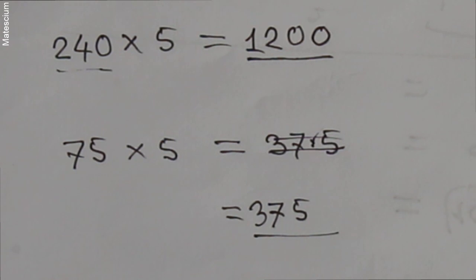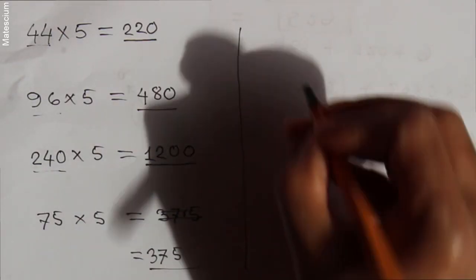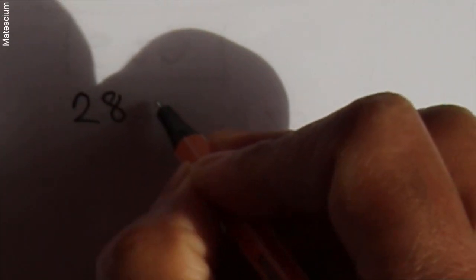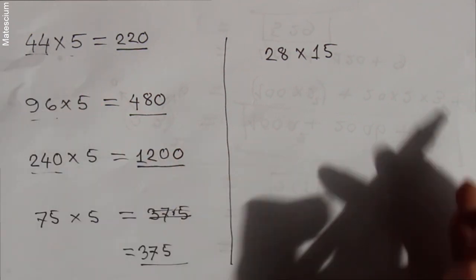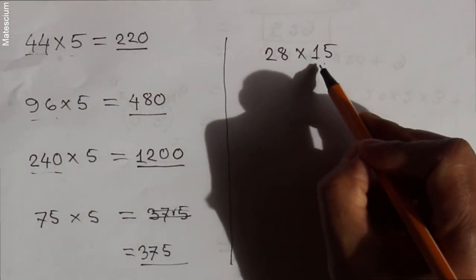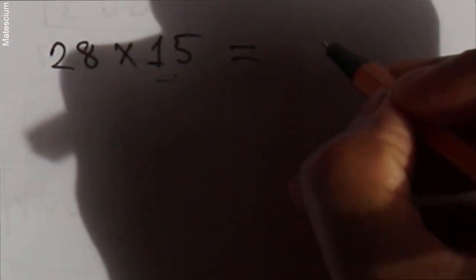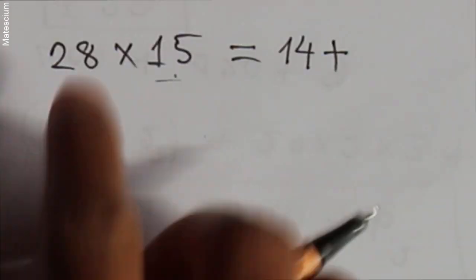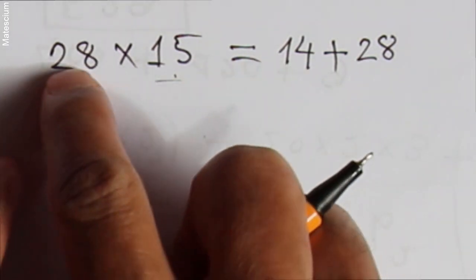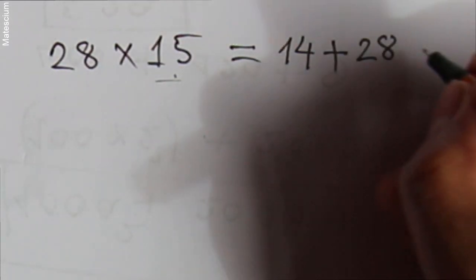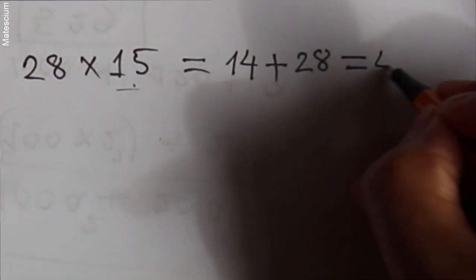This is so simple. Now I have another thing to show you. Let's consider a random number: 28 multiplied by 15. This case, any number is multiplied by 15. Apply the same tricks here — half of 28 is 14. Write the number with its half: 28 plus 14 — what is the result? 14 plus 28 is 42.